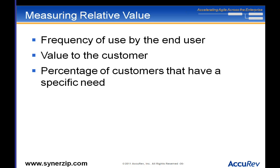You can just ask the customer what the value is for a particular feature — not overall but feature by feature. They may say, 'This is tremendously valuable — if you added this, we would pay more, order more, do more business with you, recommend you more frequently.' Lastly, how many of your customers need that? Talk to the business unit: of your customers — who are also our customers — what percentage of that market needs it? These are pretty straightforward ways of measuring relative value.